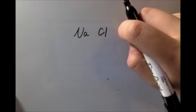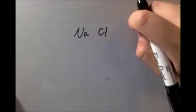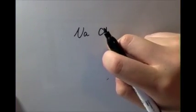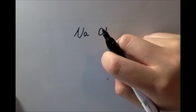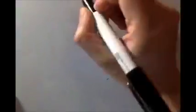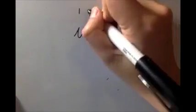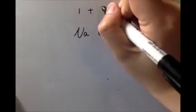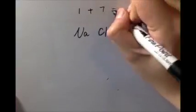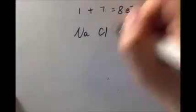We need to look at the periodic table, because the group number of the elements corresponds to its valence electron number. Sodium is in group one, so it has one valence electron. Chlorine is in group seven, so it has seven valence electrons, for a total of eight valence electrons.